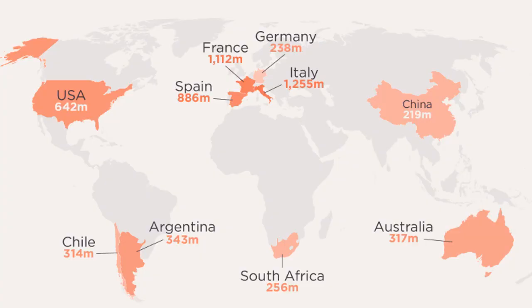Gallon is a liquid measure unit accepted in many countries. The US liquid gallon equals approximately 3.785 liters. Quart, abbreviated QT or QRT, is a unit of liquid measure widely used in the USA, Australia, and some other countries. The US quart is equivalent to 0.946 liters.